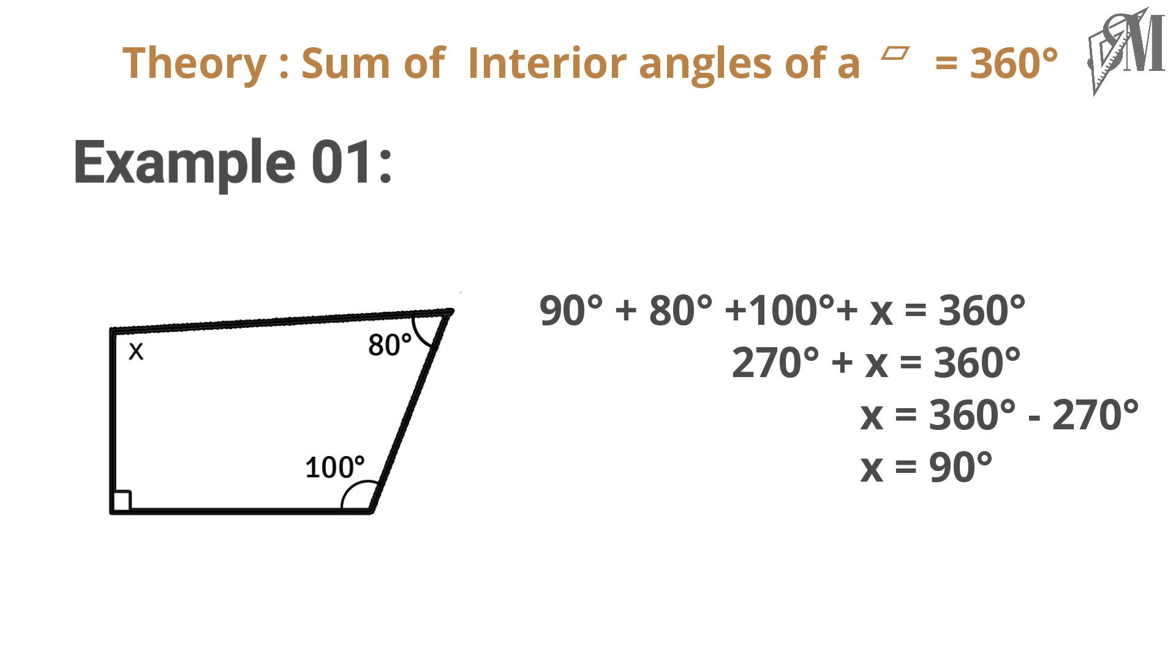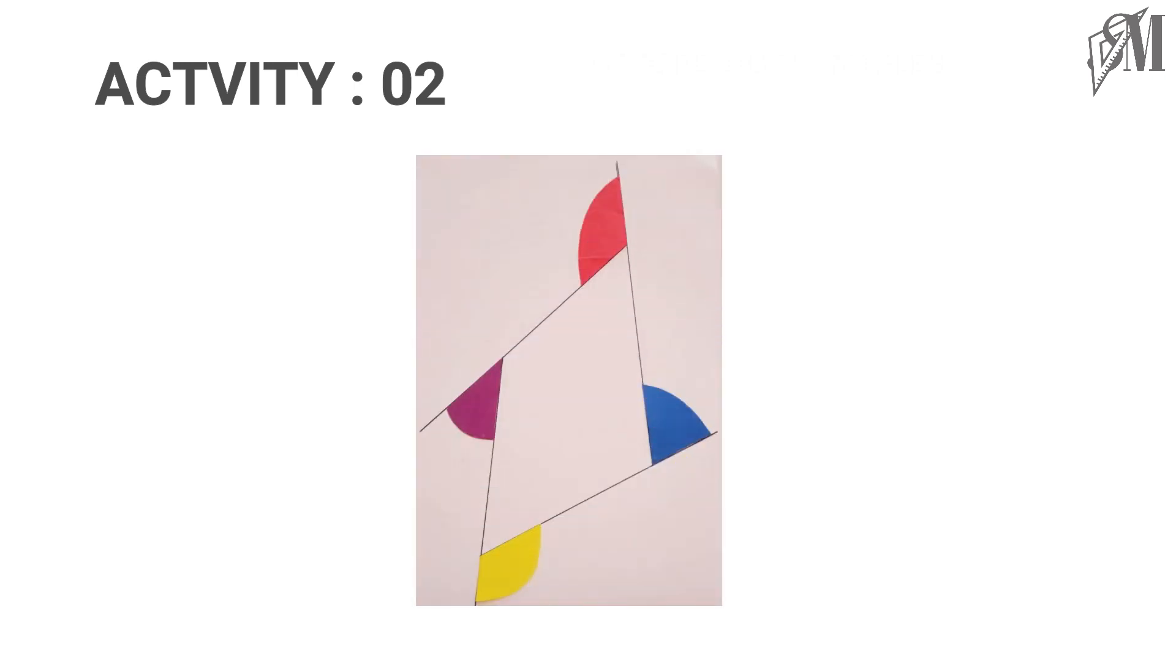Let's do another activity. Draw any quadrilateral you like and extend the sides to obtain the exterior angles. Then I give colors to these exterior angles as purple, red, yellow, and blue.